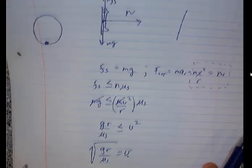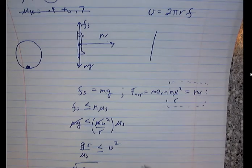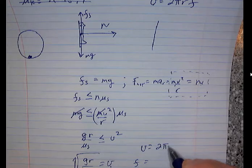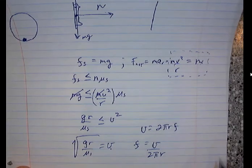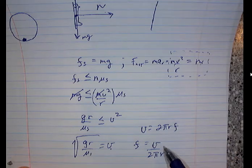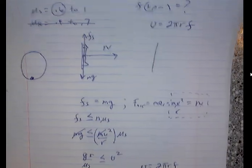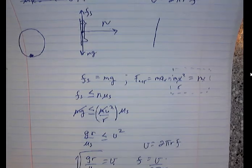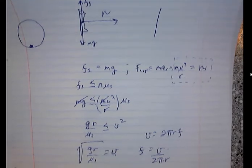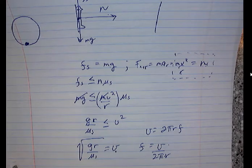Once you get V, frequency equals V over 2πr. This comes out in revolutions per second (SI units), but we want revolutions per minute. Multiply by 60 to convert to RPM. There's a lot going on in this problem — it took a whole page — with lots of different concepts. Make sure you get the units correct and pat yourself on the back when you get it right, because it is a difficult problem.